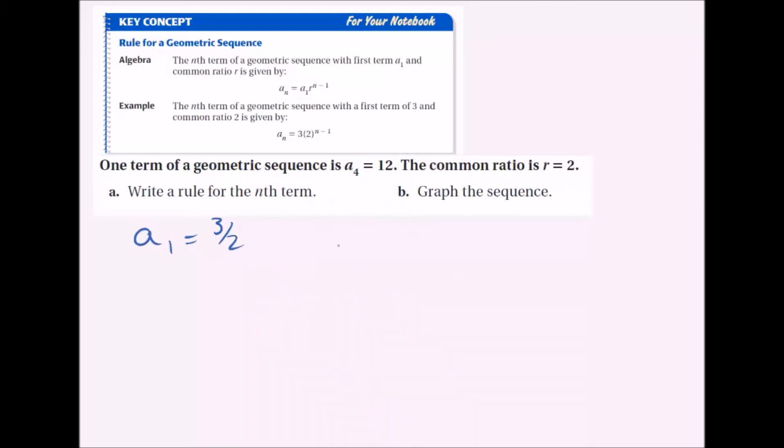Now I can just write the general rule. a_n equals 3 halves times 2 to the n minus 1. Remember, the general rule is going to have a_n and n. It's not going to have anything plugged in for those. It's just like how a general equation has x and y. You can think about n as x in this case and a_n as y. So this is the general rule for the sequence.